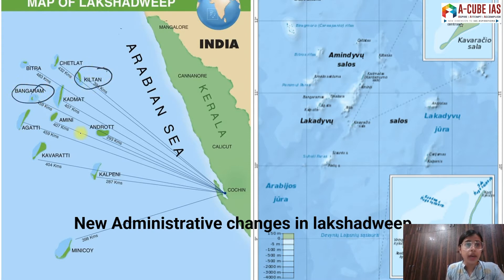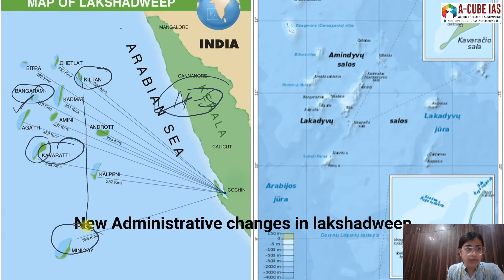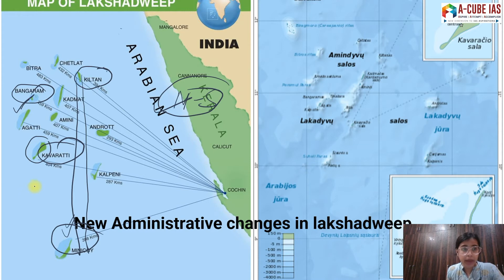If arranging islands from north to south, the order is: Kiltan at the top, then Bangaram, then Amini, and the lowest point is Minikoi. From west to east, the order is: Bangaram is the most west, then Kavaratti, then Kiltan, and Minikoi comes a little to the west as well. Also remember that the ninth parallel divides these two groups.